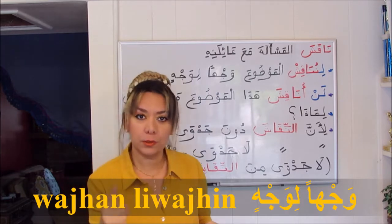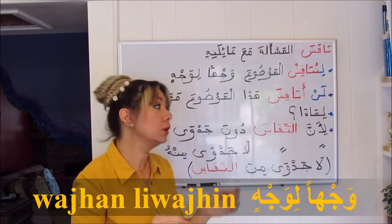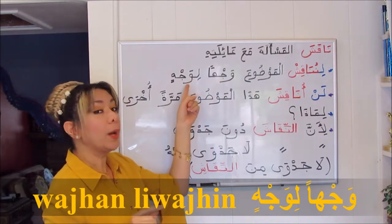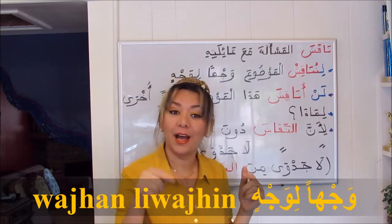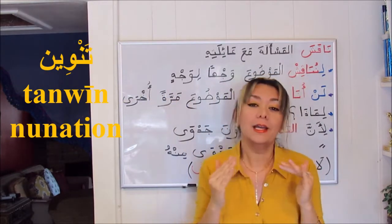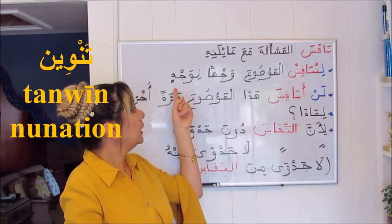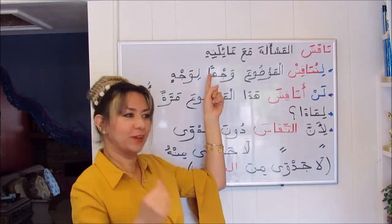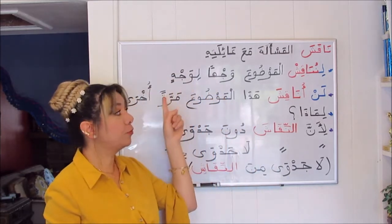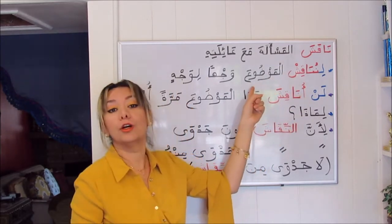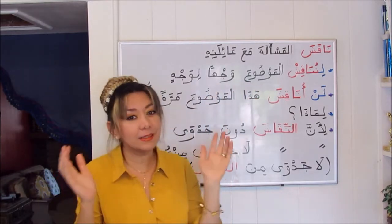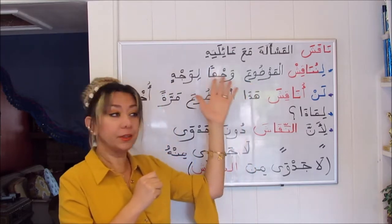وجهاً لوجه — face to face. The ل is a preposition that puts whatever comes after it in the genitive case, the same way as مع. When the following noun is indefinite, we use double short vowels — tanwin kasra — because وجه is indefinite, so لوجهٍ. We also have tanwin fatha because it is indefinite and we don't have the definite article. So: let's discuss the topic face to face — لنناقش الموضوع وجهاً لوجهٍ.